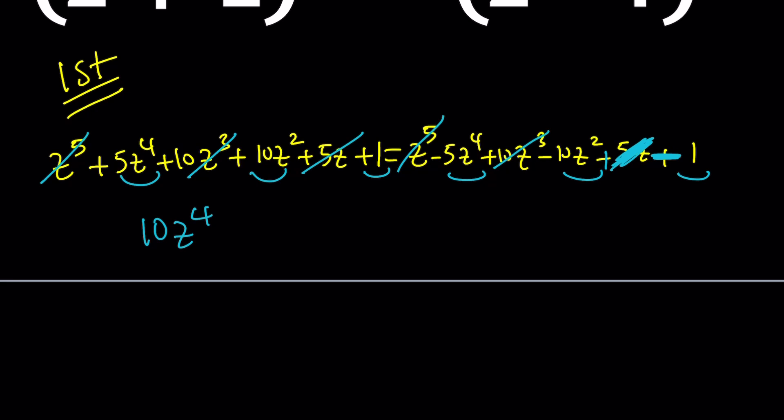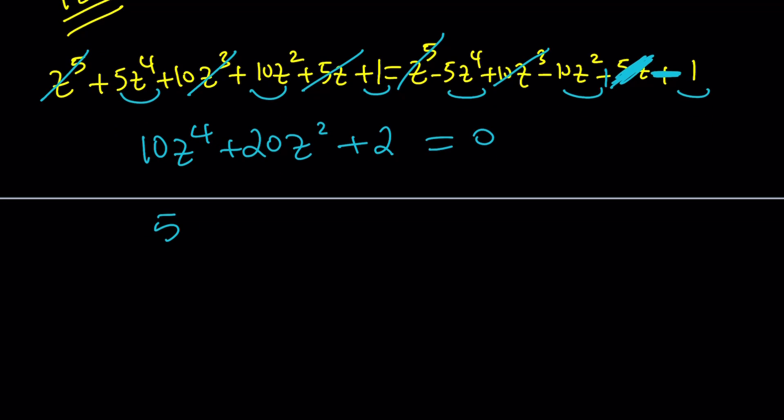We're going to get 10Z to the fourth plus 20Z squared plus 2 equals 0. And then we're going to divide everything by 2. In other words, what's left is on the left. 5Z to the fourth plus 10Z squared plus 1 equals 0. Awesome. Now, this is quartic, but it can be turned into a quadratic equation because it's kind of bi-quadratic.